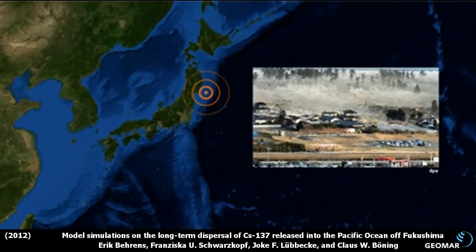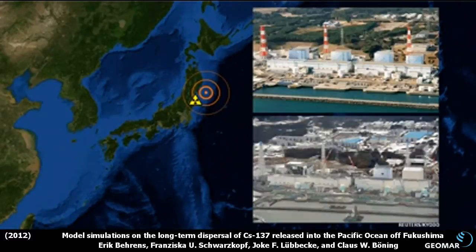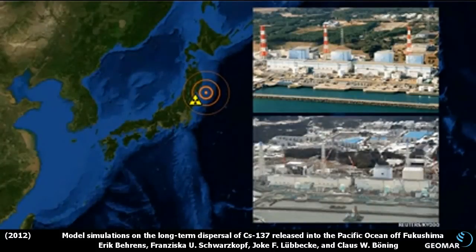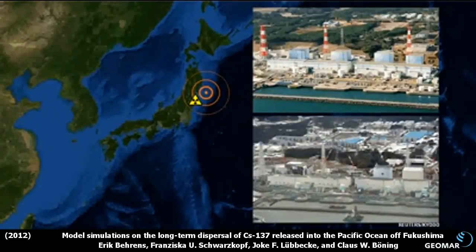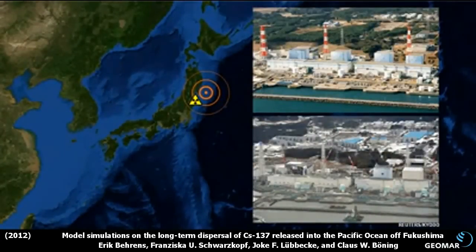Our study deals with one of the consequences of the disastrous earthquake and subsequent tsunami that hit Japan in March 2011. Caused by the explosions and meltdowns in the Fukushima Daiichi nuclear power plants, large amounts of radioactive material, including long-living isotopes such as cesium-137, were released into the environment.